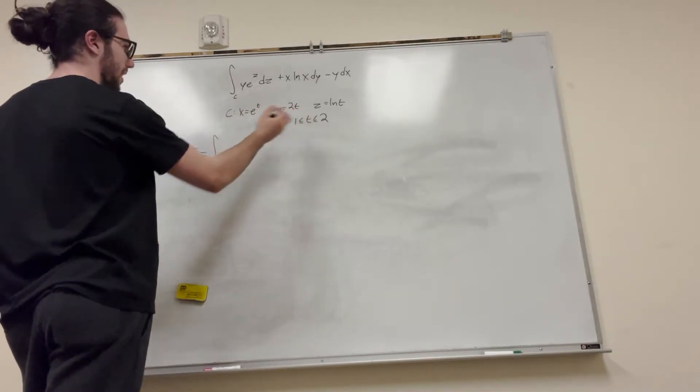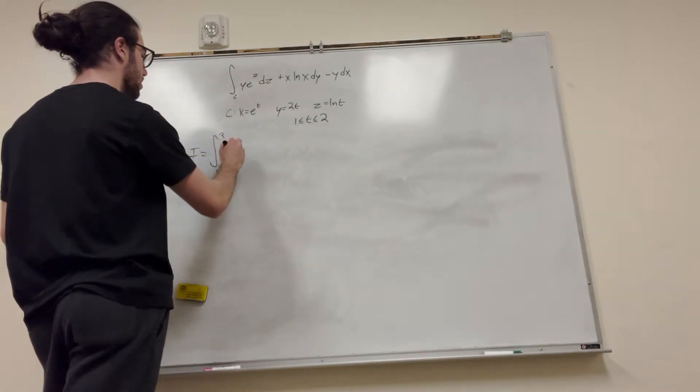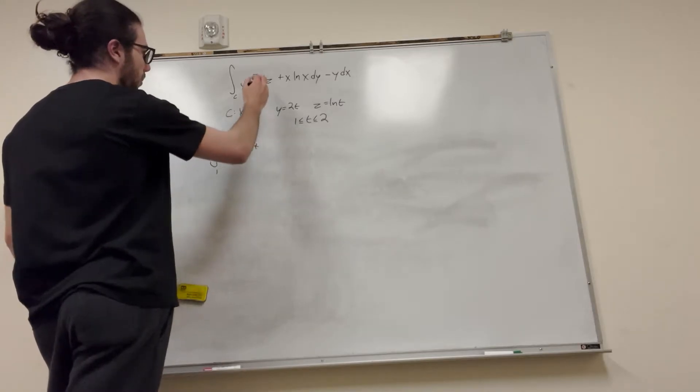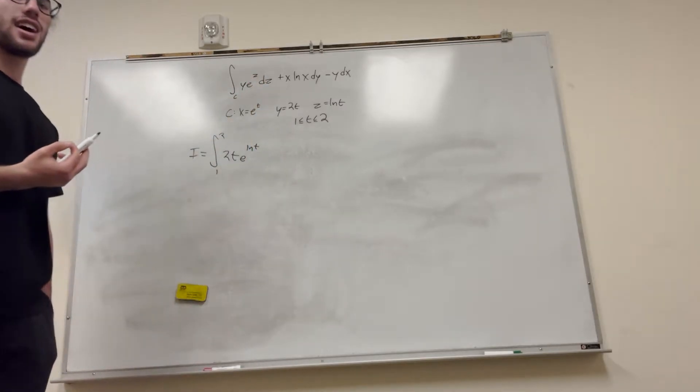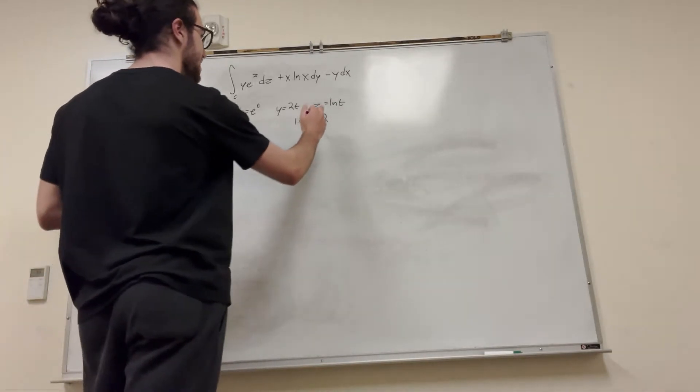i is equal to the integral, so we even have t is equal to 1 to 2. So y becomes 2t, e to the ln of t. And then what do we do with the dz, right?